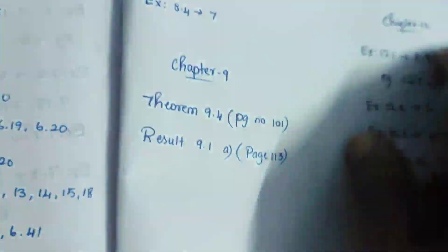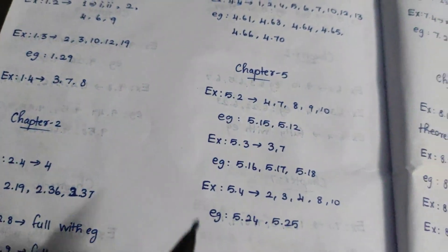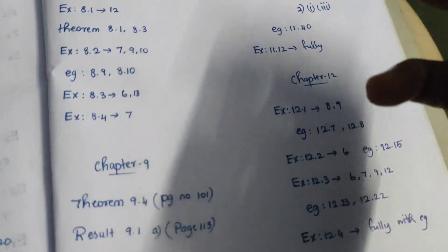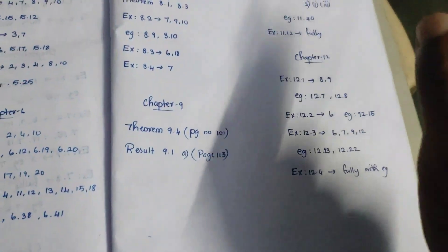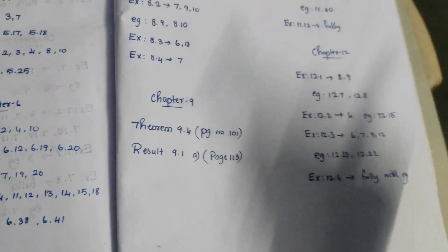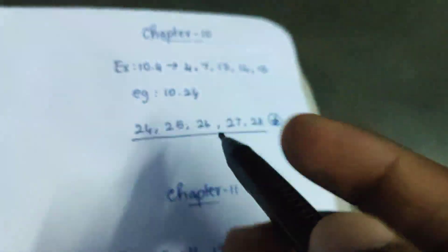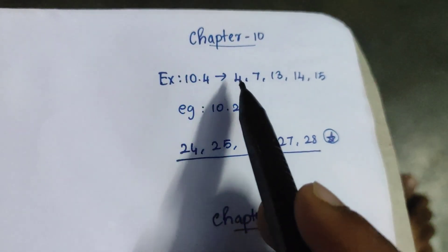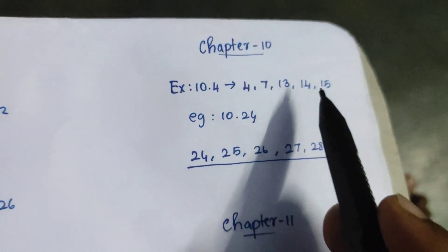But we have the 10th chapter. In this 10th chapter, we have the 11th chapter, 12th chapter: 1st, 2nd, 3rd. We have 10 marks. Probability is 5 marks. Statistics is 5 marks. Matrices is 5 marks. So we have the 10th chapter. Exercise 10.4: 4, 7, 13, 14, 15.